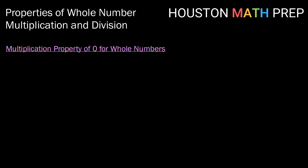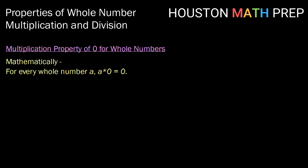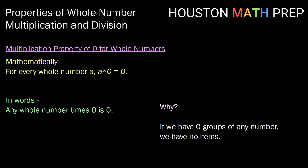For multiplication, we have some new properties to be aware of. First, let's look at the multiplication property of zero for whole numbers. Mathematically, we can say for every whole number a, a times zero equals zero. In words, any whole number times zero is zero. Why is that the case? Think about how we describe multiplication — it tells us how many groups of some number we have. If we have zero groups of a number, then we have no groups and therefore no items.